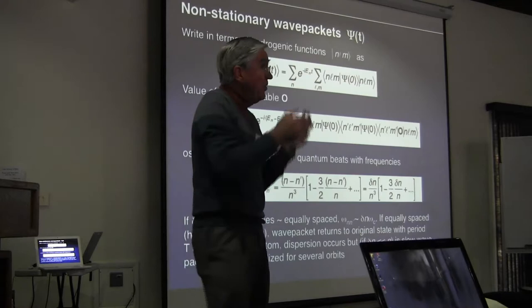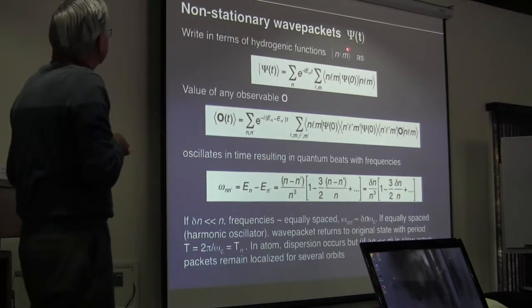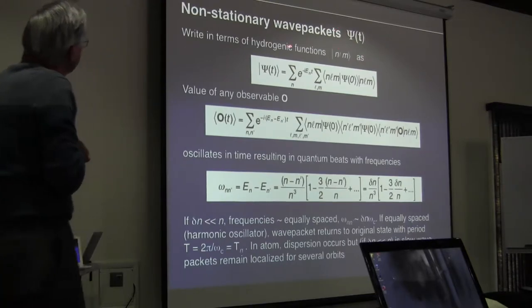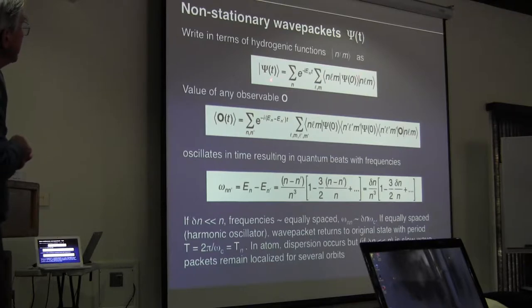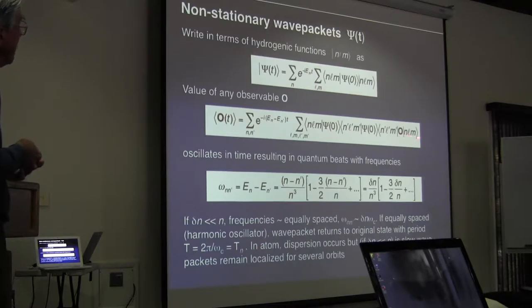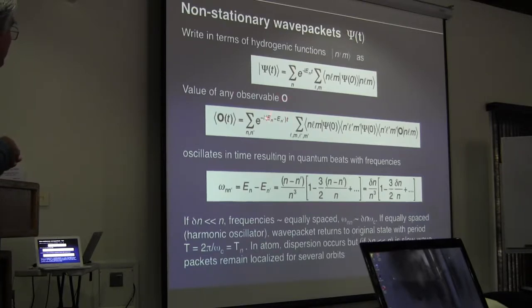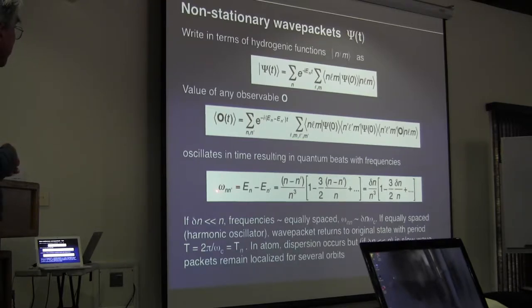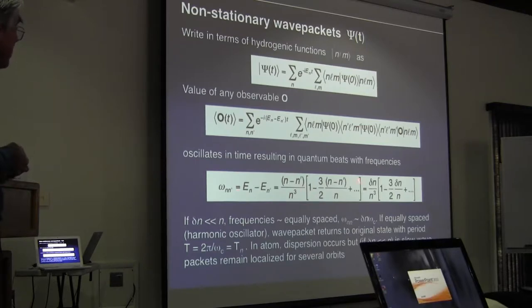We're not dealing here with stationary states but with localized time-dependent wave packets — psi as a function of t. We can write these in terms of hydrogenic functions in the usual fashion, with expansion coefficients and time evolution. To monitor the evolution of the wave packet, you look at some observable, which can be written in terms of matrix elements, expansion coefficients, and time dependence. The observable has an oscillation in time governed by the energy differences E_n minus E_n′, with frequencies given by those energy differences.